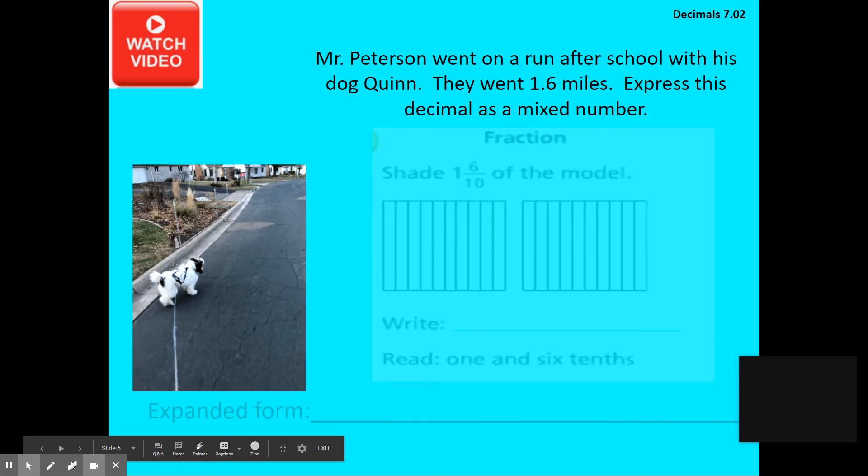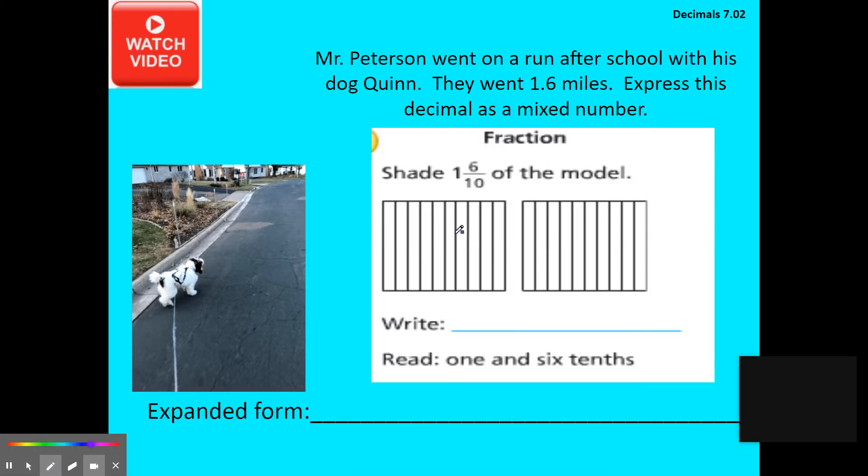Given this model, I would need to shade one whole square. Each of the 10 parts should have a little bit of purple shade in there to express that one whole. The next model is going to get six of its 10 parts with a line through it to express that part of my mixed number or decimal.